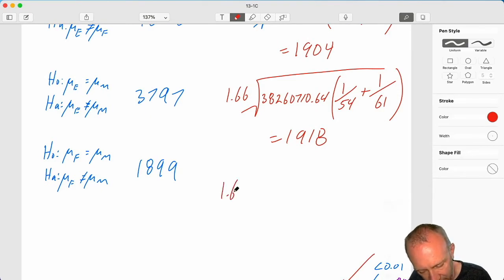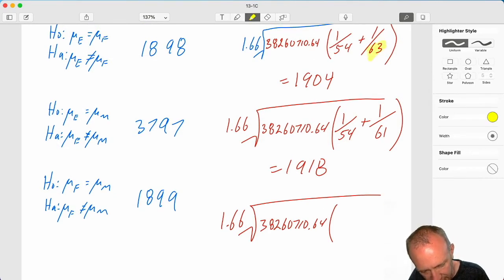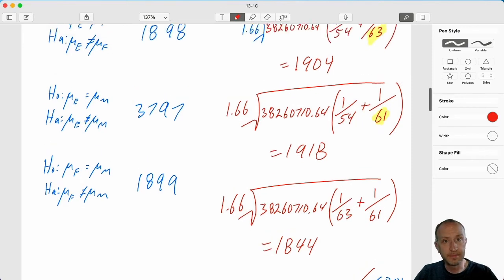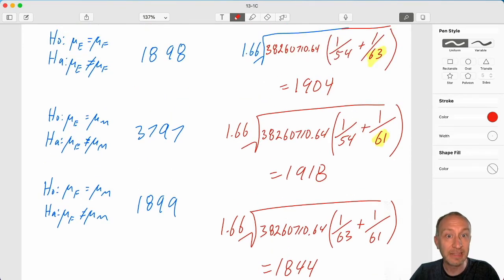And finally our last one. 1.66. Same MSE. And my sample size for finance, that's 1 over 63. And my sample size for marketing, 1 over 61. I'll be glad to be finished with these calculations. 1844. There we have our LSDs for the test.